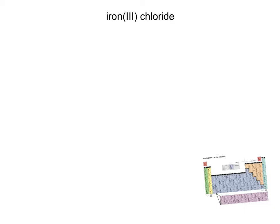In this example we're looking at a binary compound of cations with variable charges. A binary compound is one made up of two different elements, and the example we're going to be looking at is iron(III) chloride.